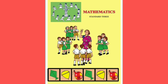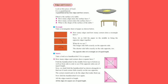Hello friends, how are you? In the previous session we learned about quadrilaterals, triangles, and circles. Today we learn about edges and corners in detail. Look at this piece — we had seen it is a quadrilateral. A quadrilateral has four edges and four corners.